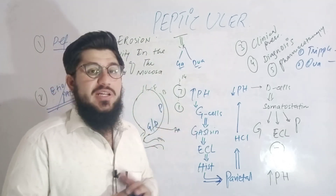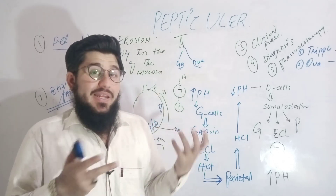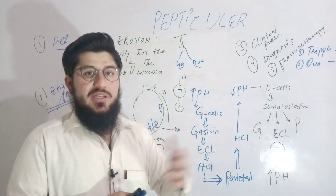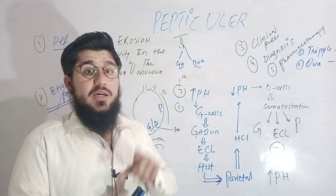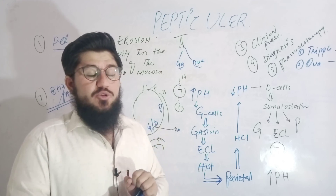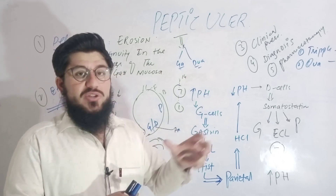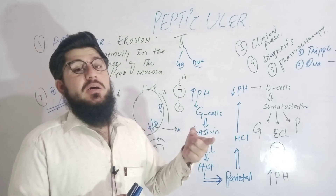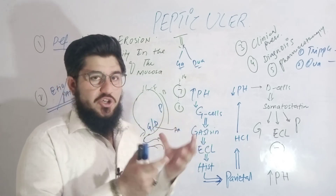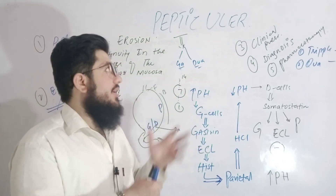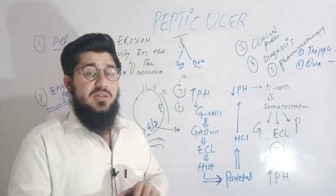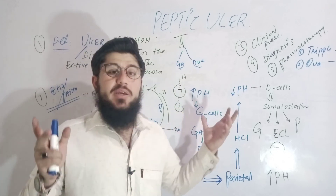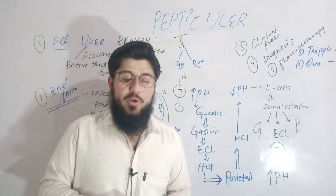If a patient is allergic to penicillins and cannot take amoxicillin, we instead indicate metronidazole in triple therapy. These are the key points regarding peptic ulcer treatment. This was an overview — if you still have confusion, drop a comment in the box.